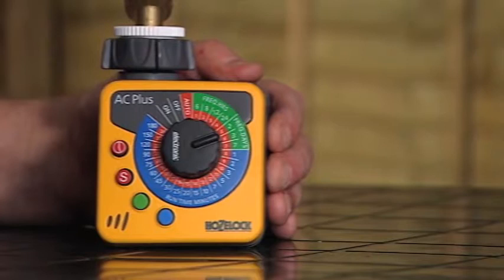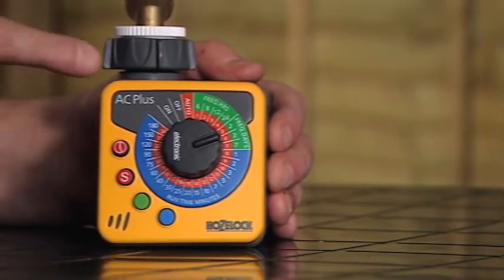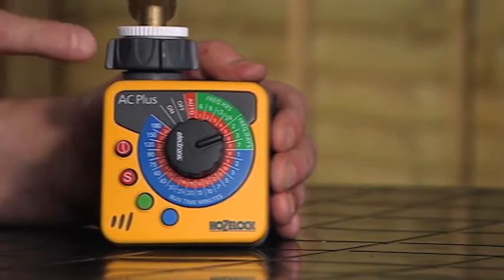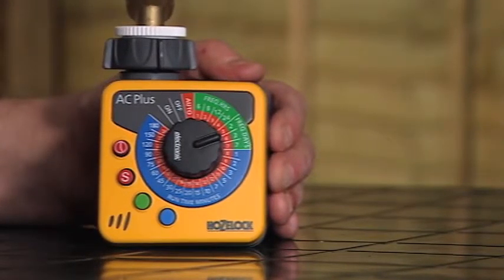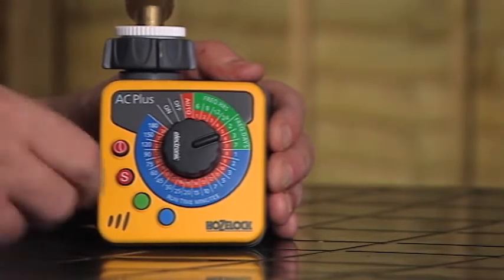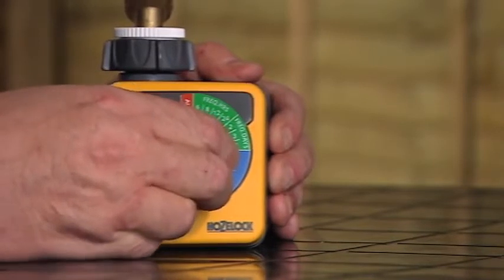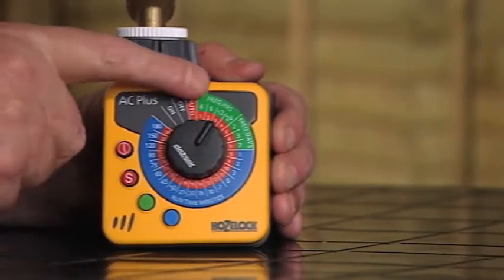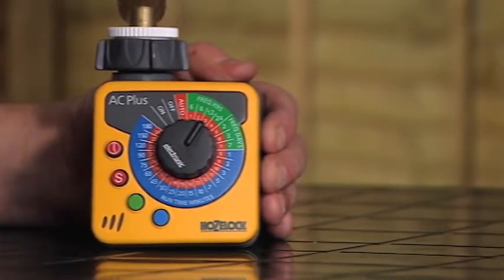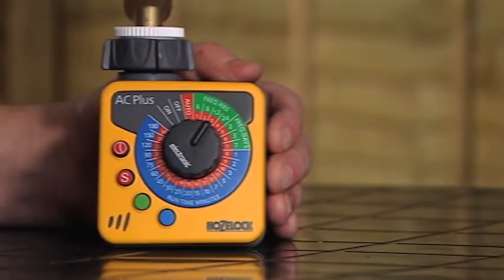The next thing we have to decide is how many times a day we want the watering to occur, whether this is every six hours, eight hours, 12 hours or 24 hours, or every two, three or seven days. So let's say we want this to happen twice a day. We select the 12 hour position with the dial on the green sector, and this time we press the green button to confirm that that's correct and you'll hear the little beep.